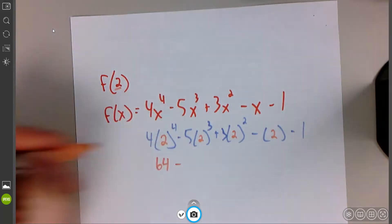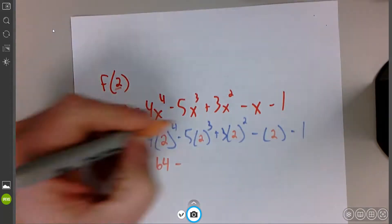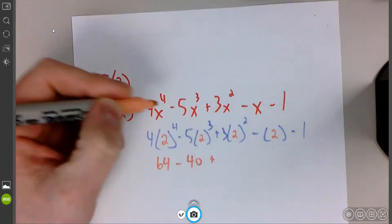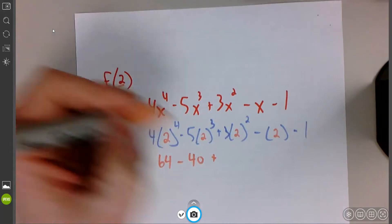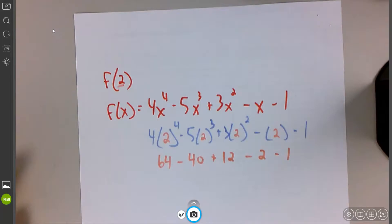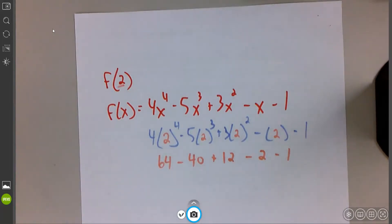Next, minus. 2 to the third power is 8. 8 times 5, 40. Plus 2 to the fourth, 2 to the second power is 4. 4 times 3, 12. Minus 2, minus 1. Now we just go down the line with it.